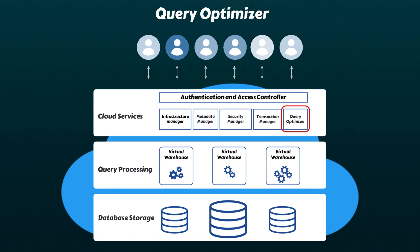We're now at the final and most important service within the Cloud Services layer: the Query Optimizer. Have you ever wondered why your Snowflake queries run so fast? It's all thanks to the Query Optimizer working behind the scenes. When a query is submitted to Snowflake, the Cloud Services layer doesn't just throw it at the processing layer — instead, it parses and optimizes the query to ensure the most efficient execution.